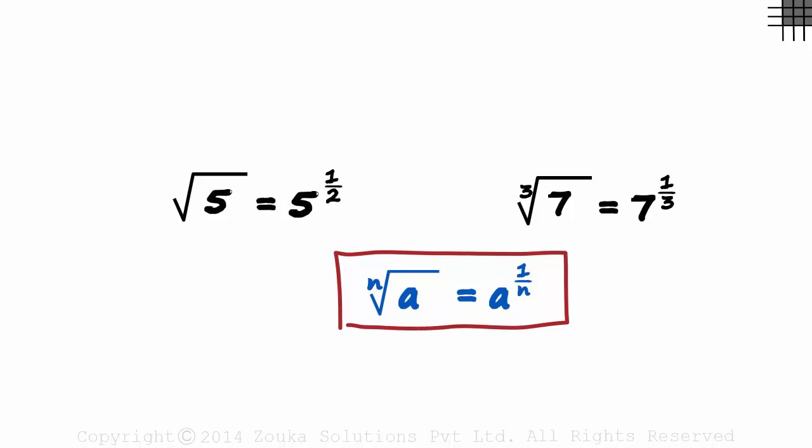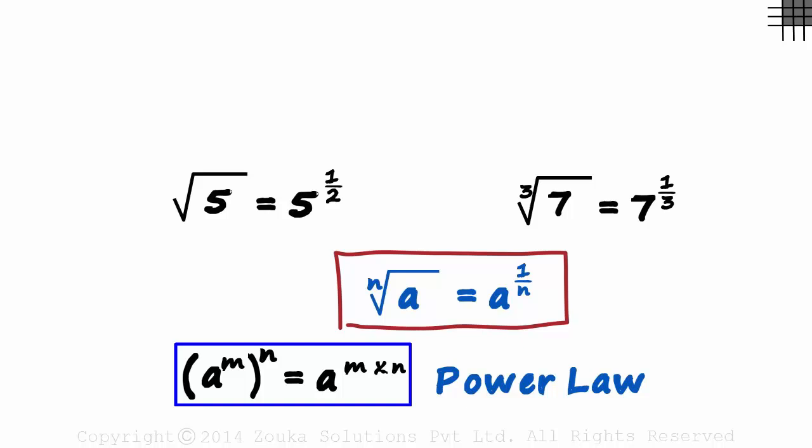But just this concept isn't enough. A raised to M the whole raised to N is equal to A raised to M times N. This is called the power law. Understand it well. A raised to M the whole raised to N is equal to A raised to M times N. These two are multiplied in the power.